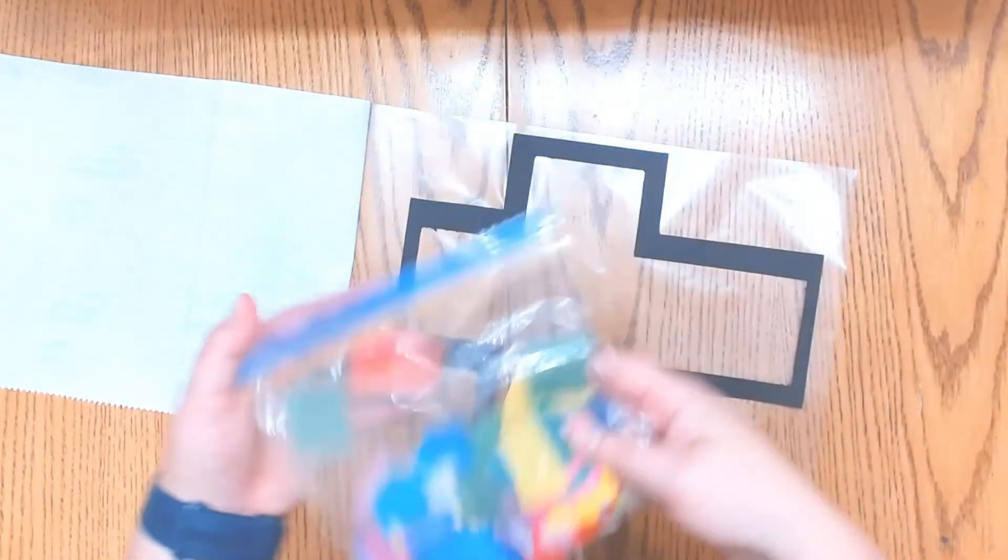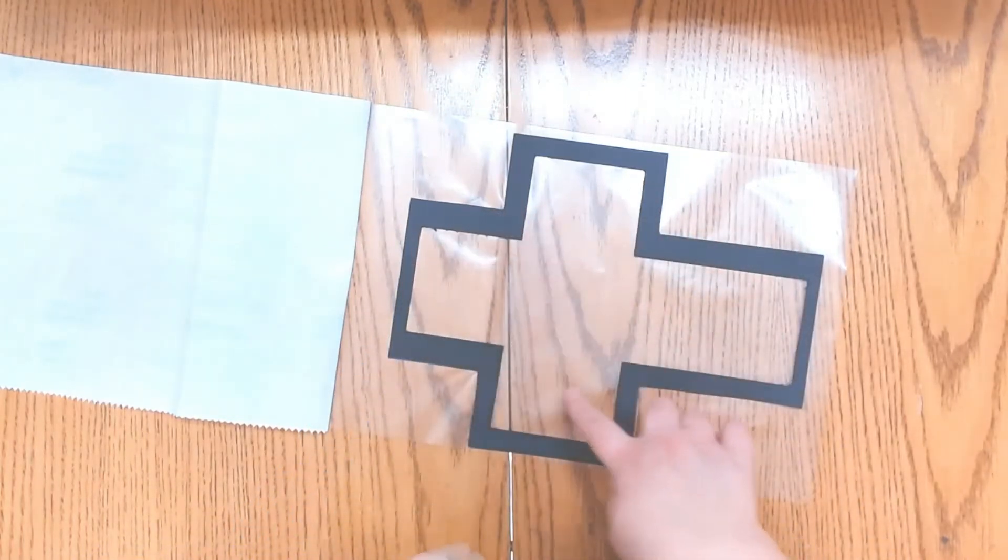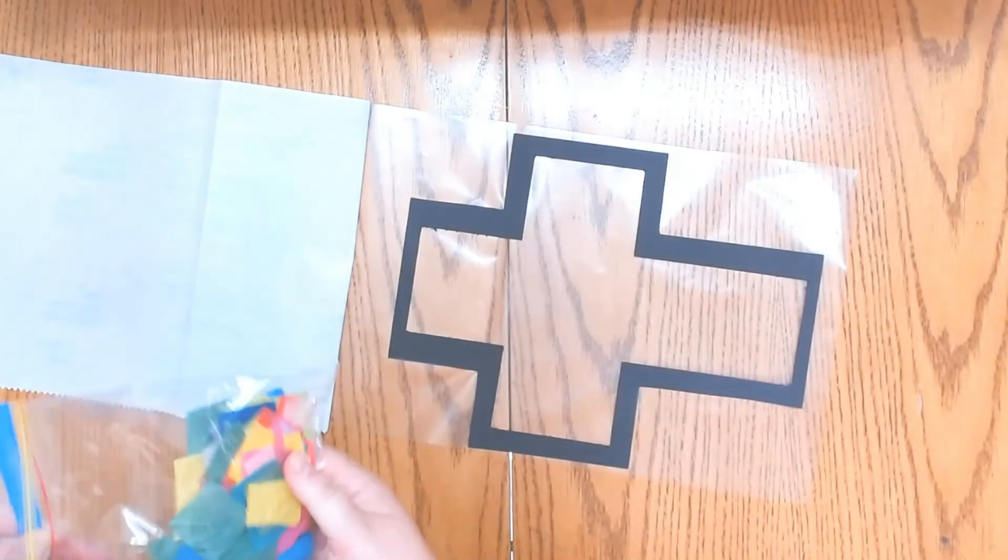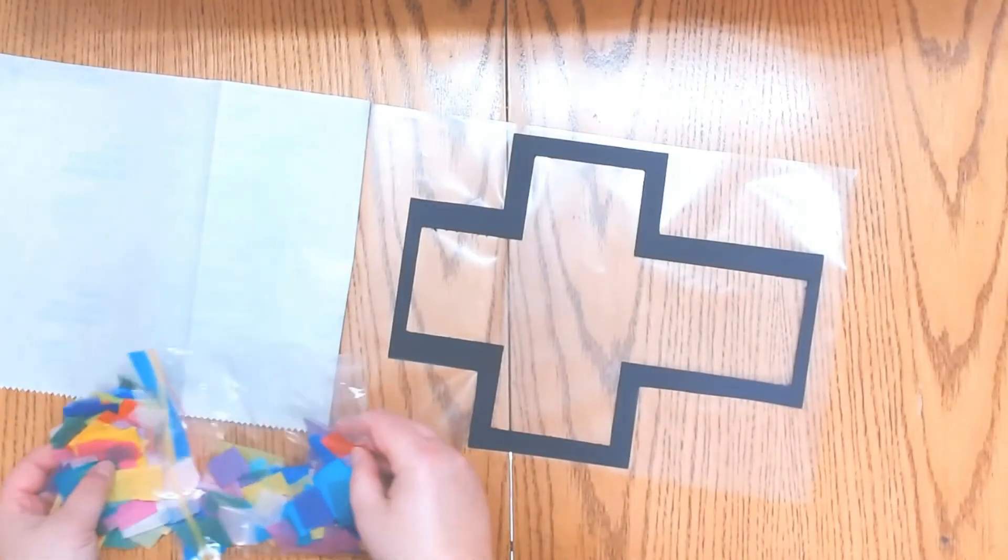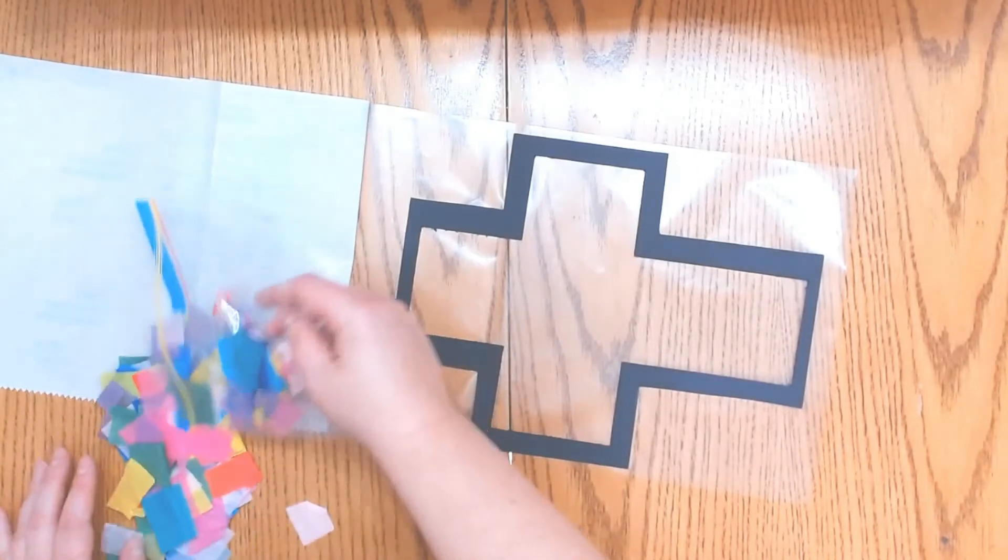And we're going to stick it onto the inside part of our cross. And with the colored tissue paper, you can have fun with it. You don't have to make them so that they all kind of line up. You can overlap the tissue paper.